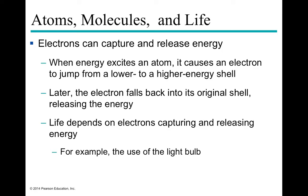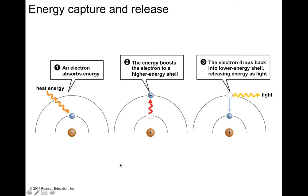Electrons can absorb energy and pop up to a higher energy shell, then release energy and fall back. This dynamic is fundamental to life — it's how energy is captured and released. A light bulb works on this principle: electricity passes through the metal filament, electrons rapidly move between shells, releasing energy as light and heat until the filament glows. Energy is absorbed, the electron pops to a higher shell, then releases energy as light and drops back down.